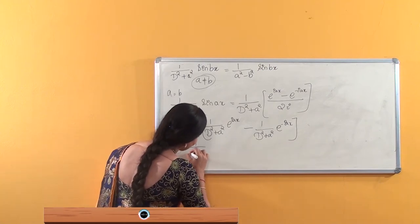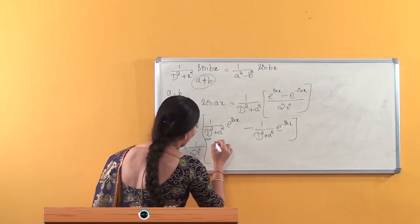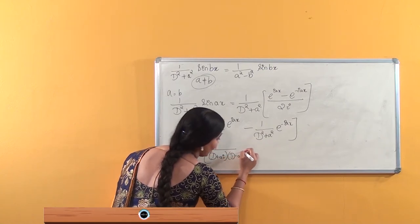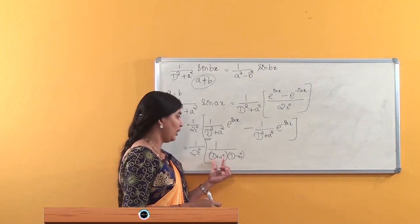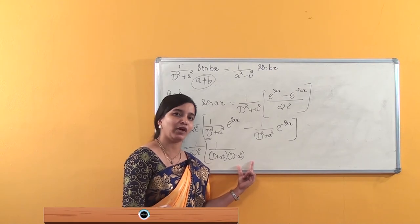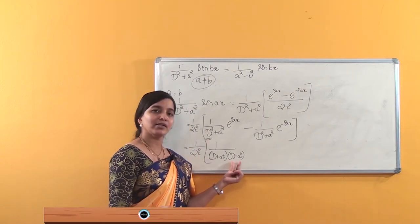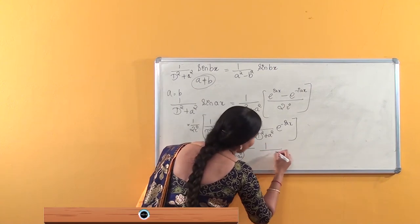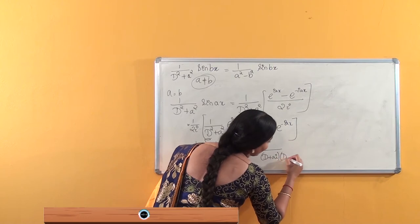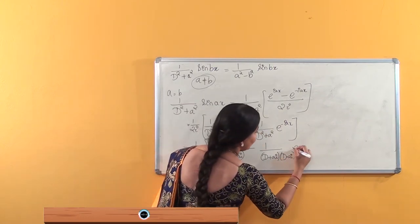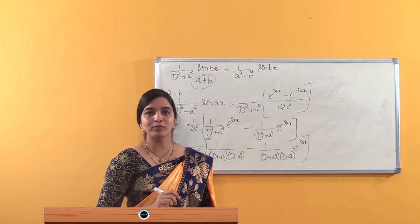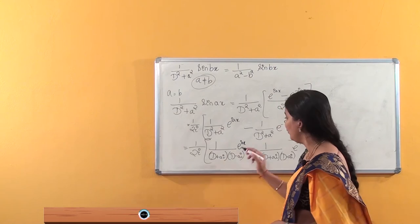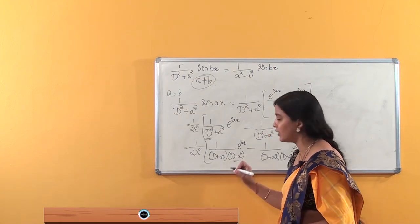We can split 1/(D²+a²) as 1/[(D+ai)(D−ai)], since (D+ai)(D−ai) gives D²−(ai)² = D²+a². Now, observe that if we substitute ia into the factor (D−ai), that term becomes zero. So we apply the operator method formula 1/f(D).